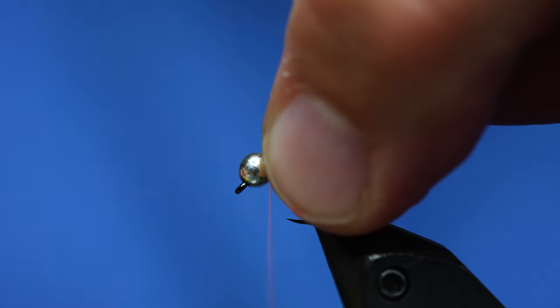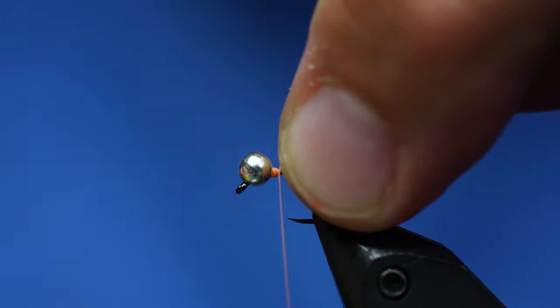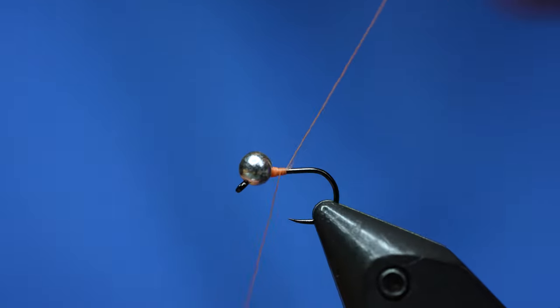Alright. So I'm going to just start with orange thread. And keep in mind you can do this in a bunch of different colors. Another popular color, and we'll list the rest before it, involves a pink bead and a tan body.